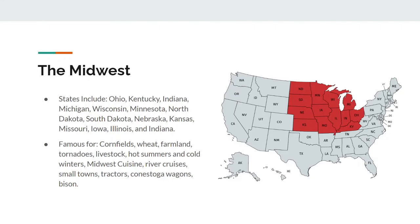The Midwest is also pretty huge. States here include Ohio, Kentucky, Indiana, Michigan, Wisconsin, Minnesota, North Dakota, South Dakota, Nebraska, Kansas, Missouri, Iowa, and Illinois. This area is famous for its cornfields, wheat, farmland, tornadoes, livestock, hot summers and cold winters, Midwest cuisine, river cruises, small towns, tractors, Conestoga wagons, and finally bison.